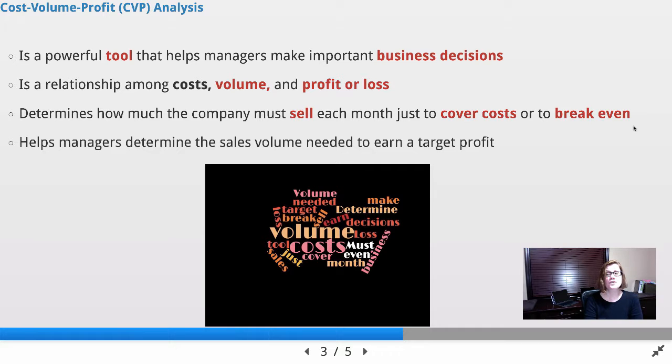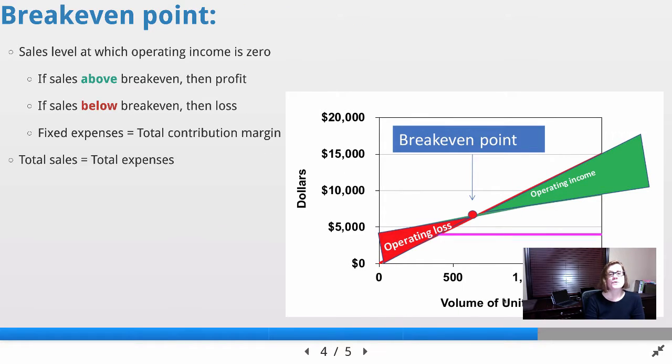When we're covering costs or we're at break-even, we are not making money. Our profit is zero. Obviously we are not in business to earn a zero profit, so we have a target profit. CVP allows us to know how much we have to sell in order to make that target profit that we like.